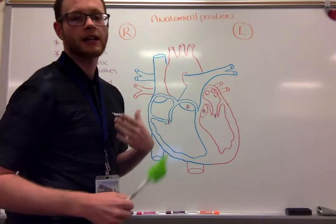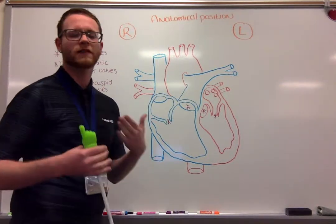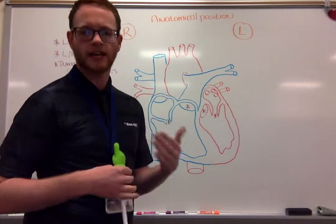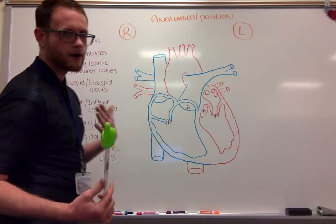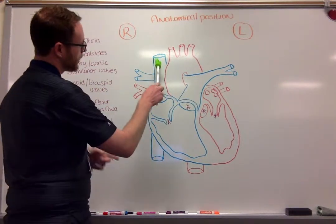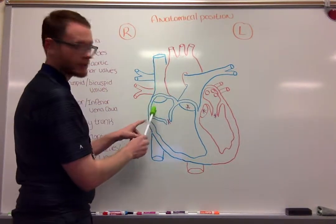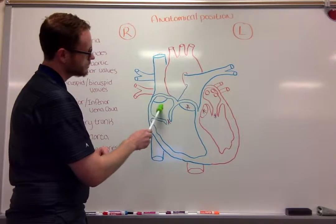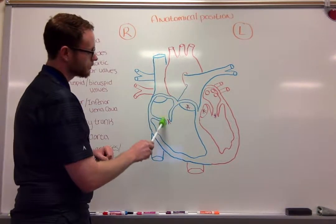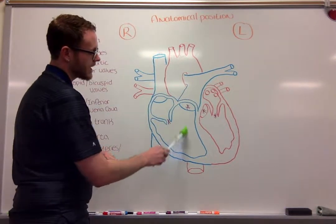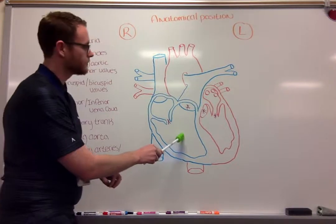These valves are there to prevent regurgitation, or the backflow of blood. So from the superior and inferior vena cava into our right atrium, through our tricuspid valve, and now we are into our right ventricle.